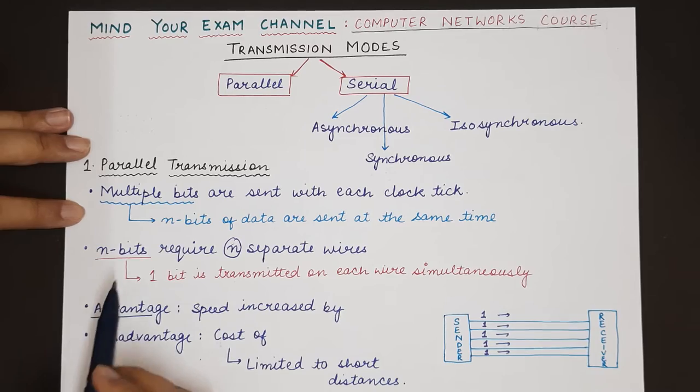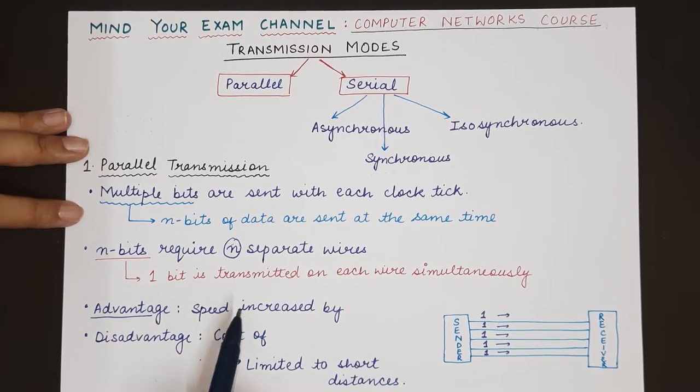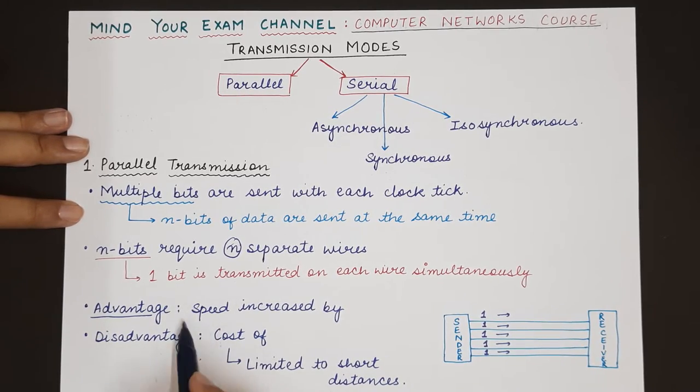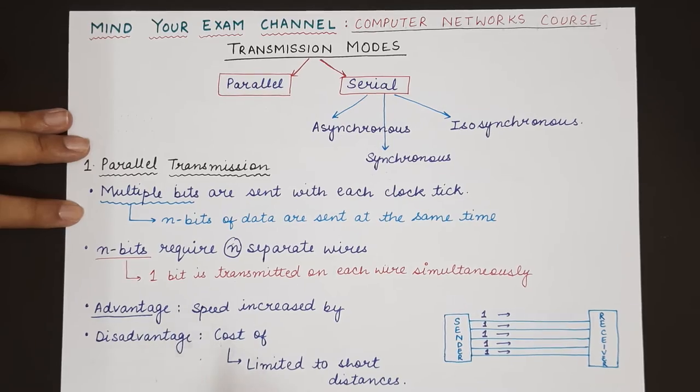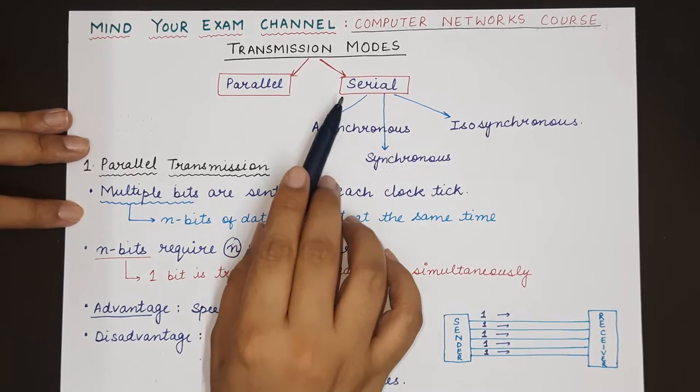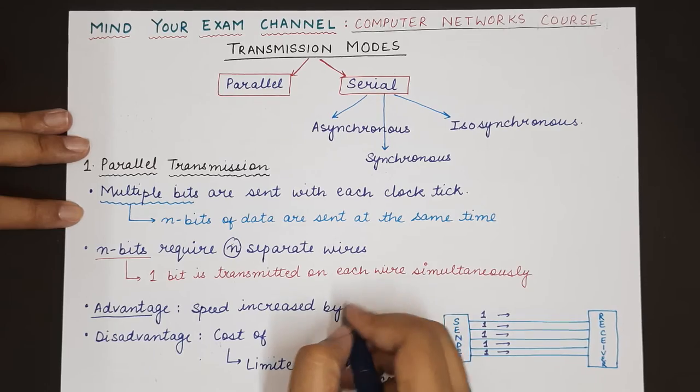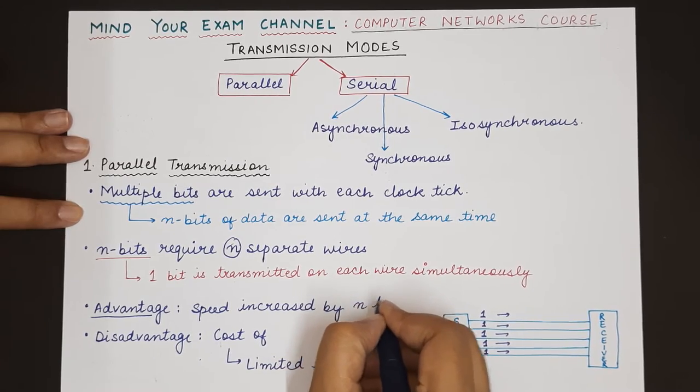The advantage of parallel transmission is that the speed is very fast. The speed of transmission is faster as compared to serial communication and it is increased by n times.